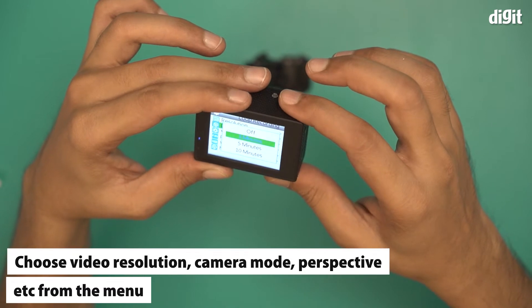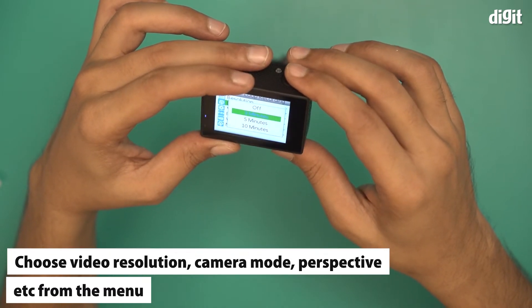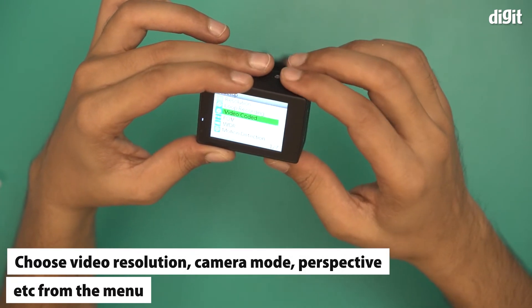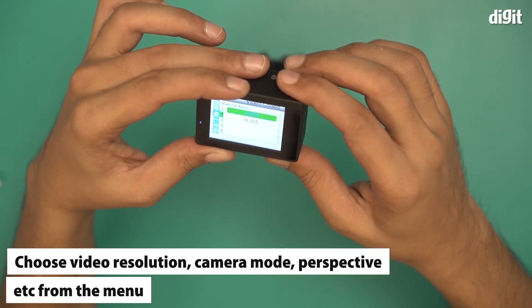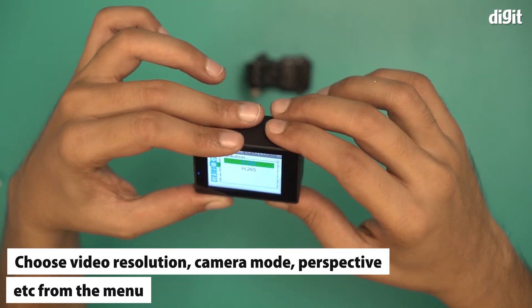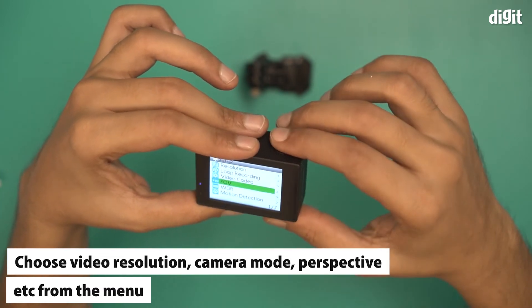There's a loop recording option. If you click on it, you can see it will record for 3 minutes, 5 minutes, or even 10 minutes. I'm going to switch it off for now. This is the video codec section—it's H.264. You can also switch between H.264 and H.265. H.264 is basically your standard MP4 format.